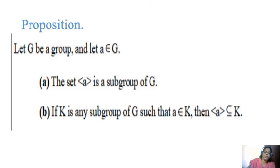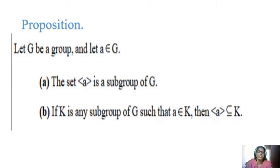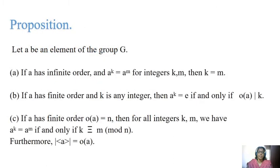A proposition: let G be a group and let A belong to G. The set generated by A, written ⟨A⟩, is a subgroup of G. It is a cyclic subgroup of G. If K is any subgroup of G such that A belongs to K, then ⟨A⟩ is contained in K.